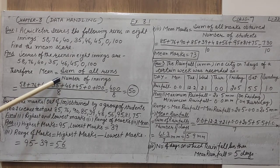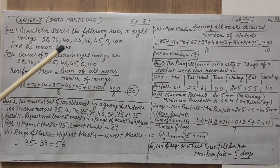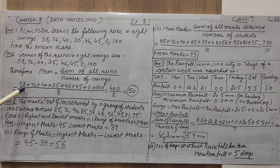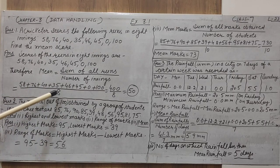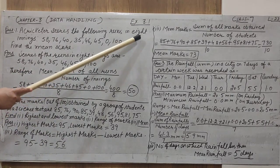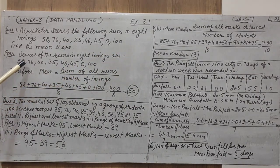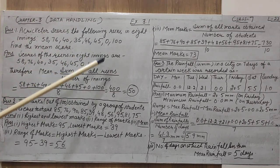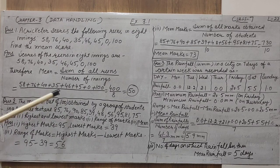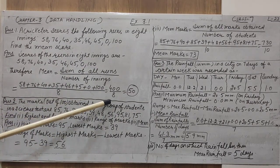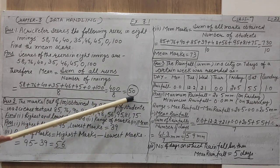First, we find the sum of all the runs: 58 + 76 + 40 + 35 + 46 + 45 + 0 + 100, divided by 8. How many innings are given? 8. You can count the numbers: 1, 2, 3, 4, 5, 6, 7, 8. The sum total of all these numbers is 400. And 400 divided by 8 gives us the answer 50.